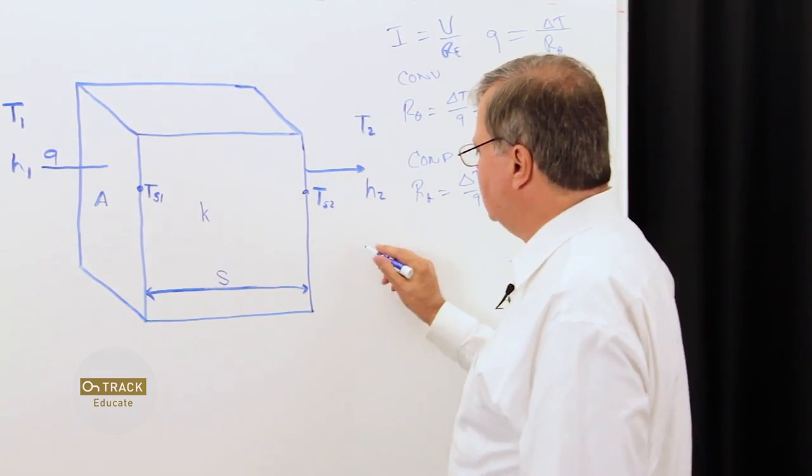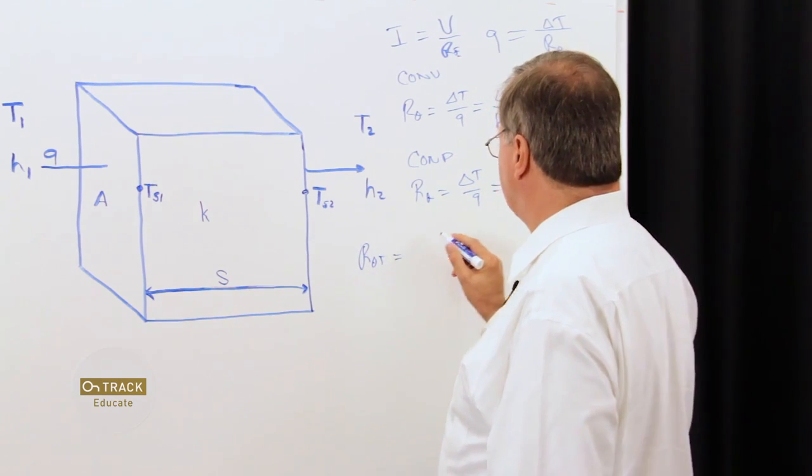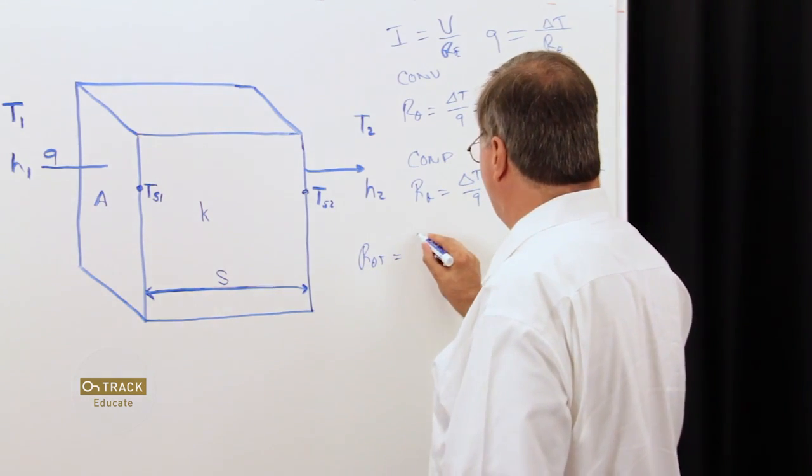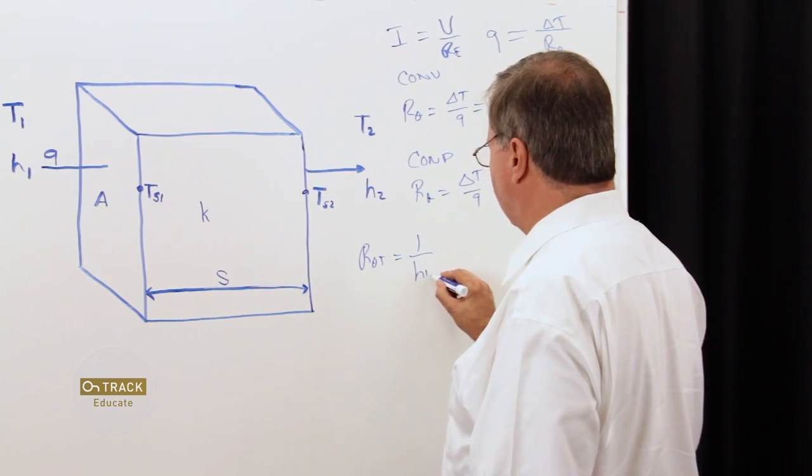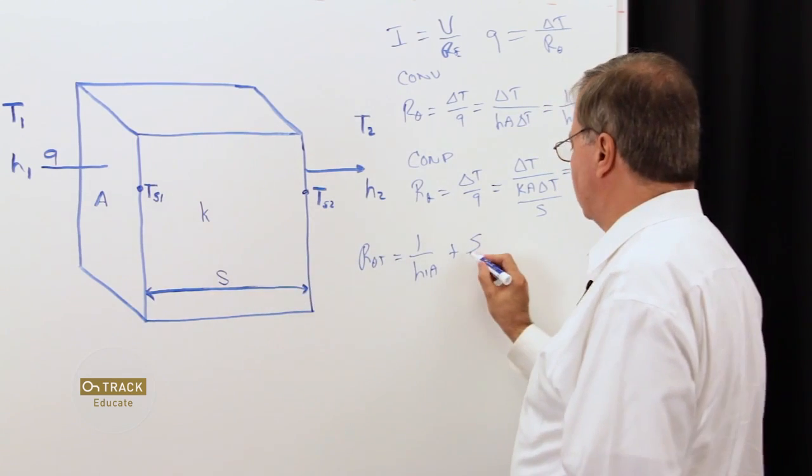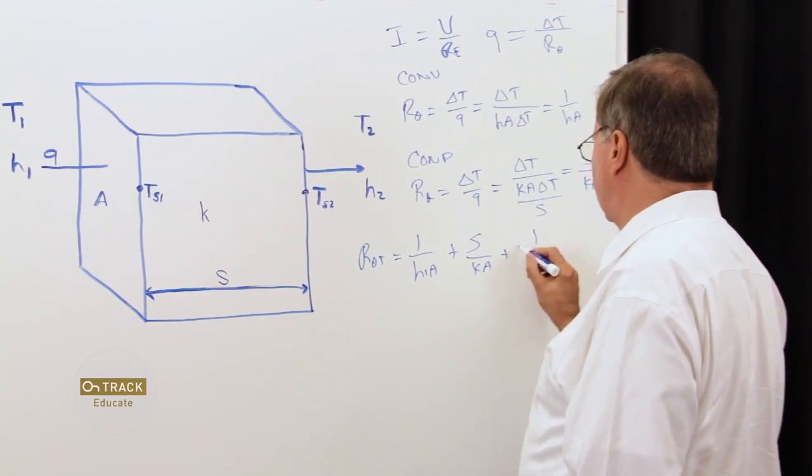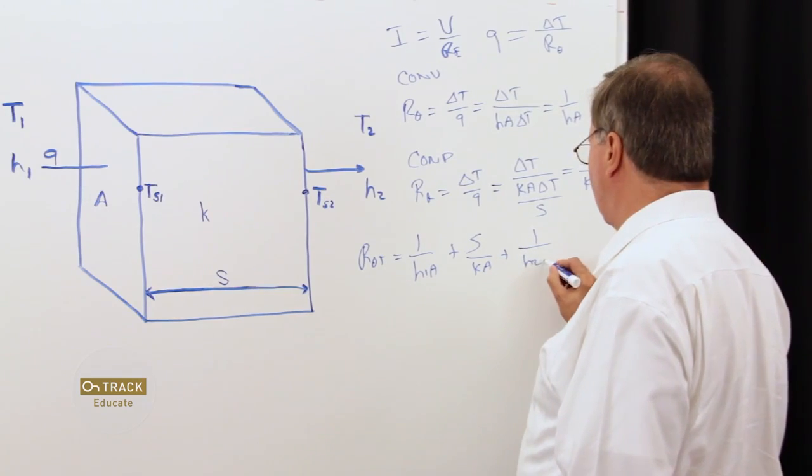So, in this case, R theta total is equal to 1 over H1A plus our distance through our solid material over K, A, plus 1 over H2A.